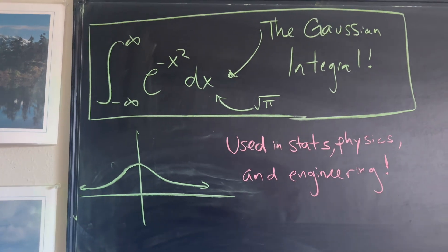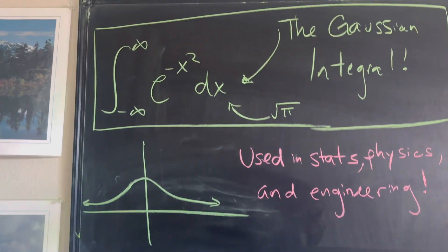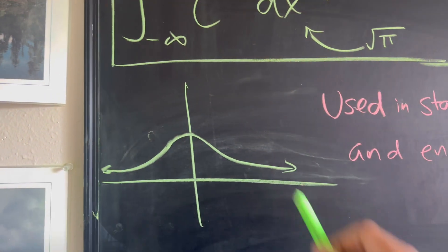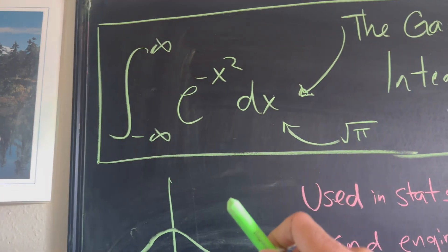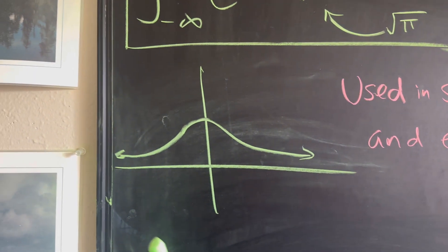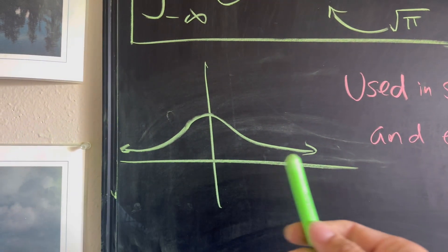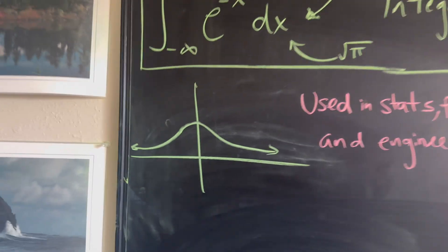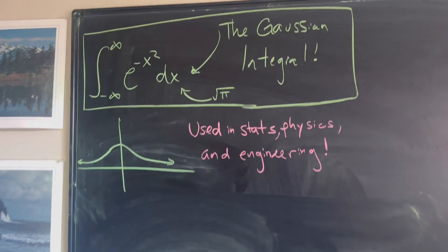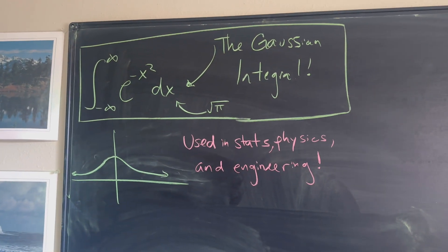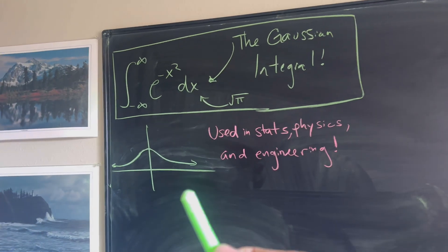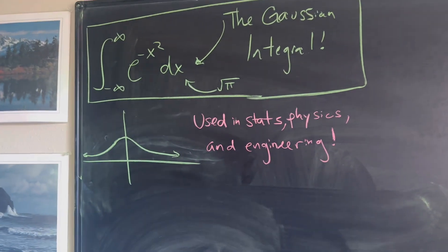Just imagine that this particular function looks sort of like this, and if we're taking the integral from negative infinity to infinity, we're really trying to take the area underneath this curve. It sort of mimics a very common phenomenon that you see, especially in stats — think of the normal distribution.